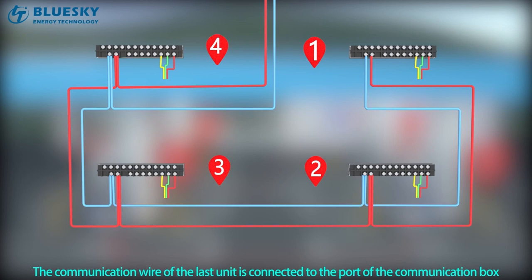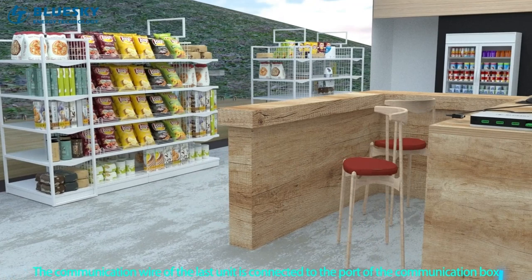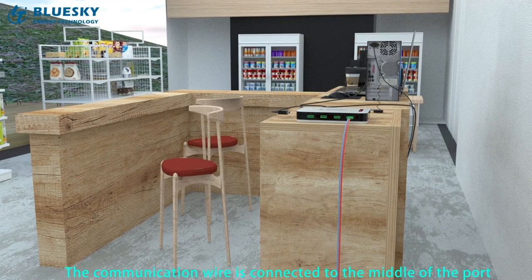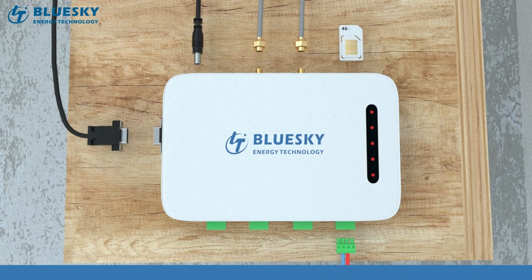The communication wire of the last unit is connected to the communication box port — connected to the middle of the port, with the blue wire on the left and the red wire on the right.